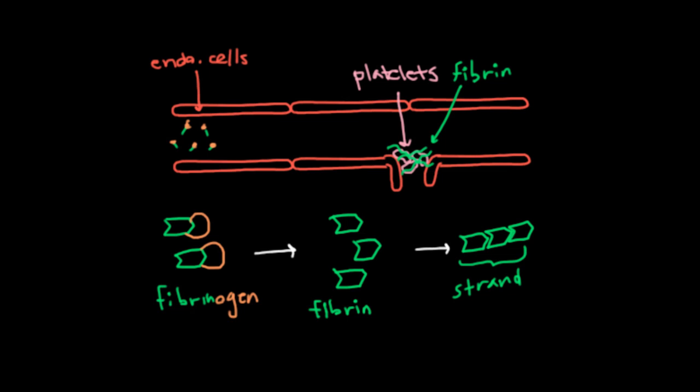So the question then becomes, how does your body know to convert fibrinogen into fibrin at the site of injury? And the answer is that when you injure your endothelium here, you're going to expose your blood to new proteins. And maybe your actual endothelial cells will release some proteins because they're damaged. So basically, you have new proteins that weren't seen before and that are seen now. And those proteins will eventually cause fibrinogen to turn into fibrin.